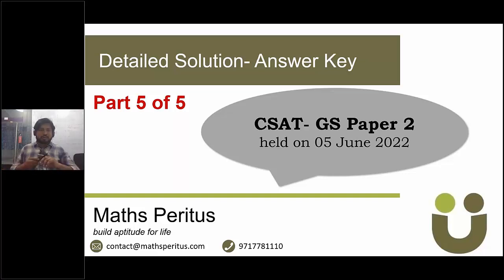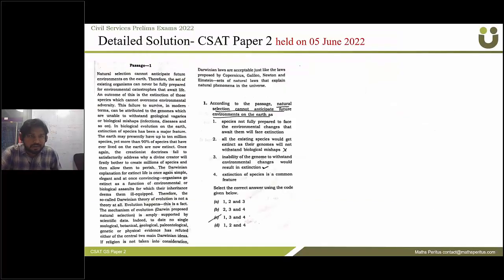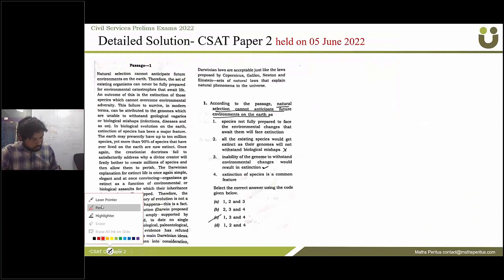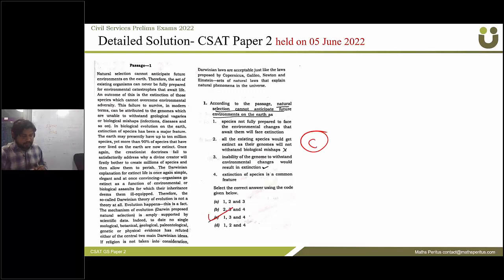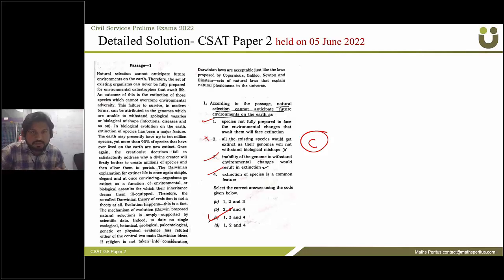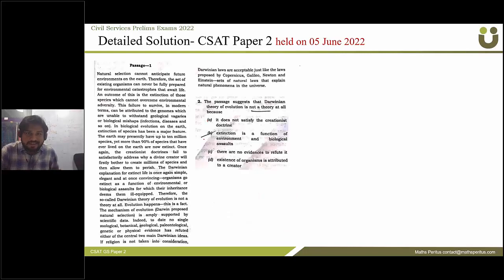So let's discuss these questions. The first passage is related to natural selection and Darwin. The first question asks: according to the passage, natural selection cannot anticipate future environment on Earth. The correct answer is option C, meaning statements 1, 3, and 4 are correct, and statement 2 is the incorrect one.